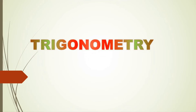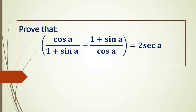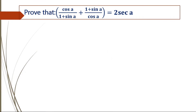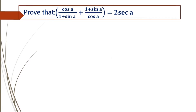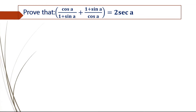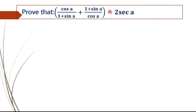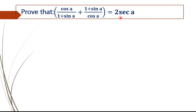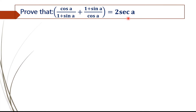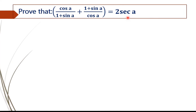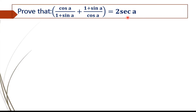Trigonometry. Here we have to prove cos A divided by 1 plus sin A, plus 1 plus sin A divided by cos A, equals 2 sec A. That is, the LHS of this equation is equal to the RHS of this equation.